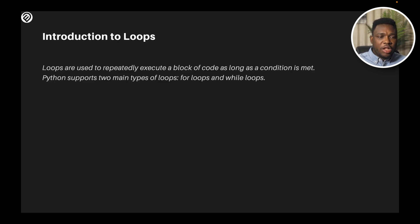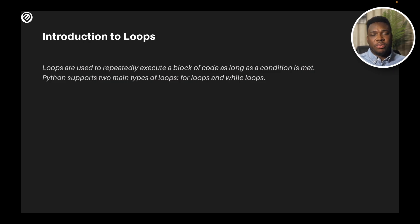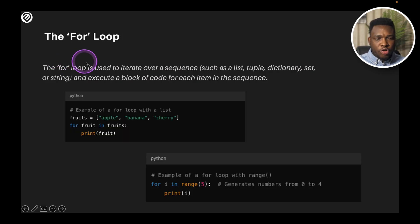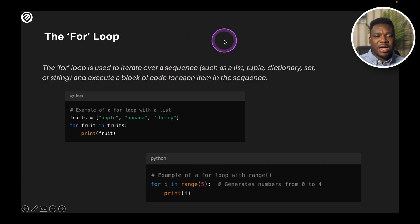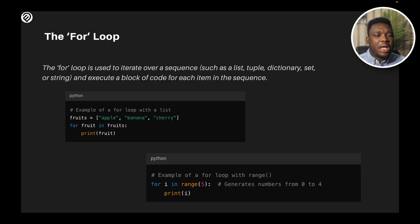Loops are used to repeatedly execute a block of code as long as a condition is met. Python supports two main types of loops: the for loop and the while loop. The for loop is used to iterate over a sequence, such as a list, tuple, dictionary, set, or string. You could go over a string of text and execute a block of code for each item in the sequence.